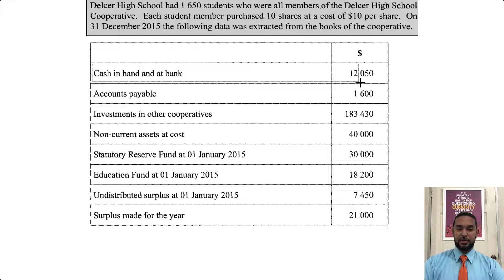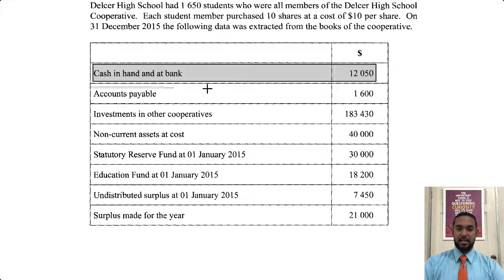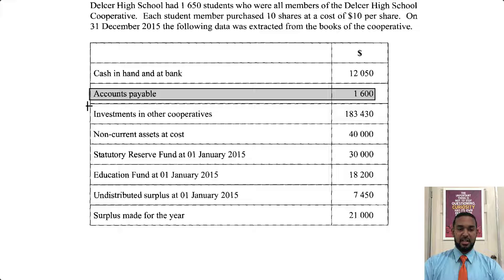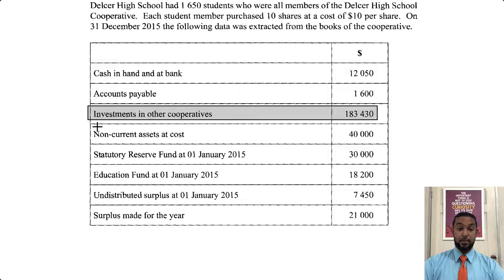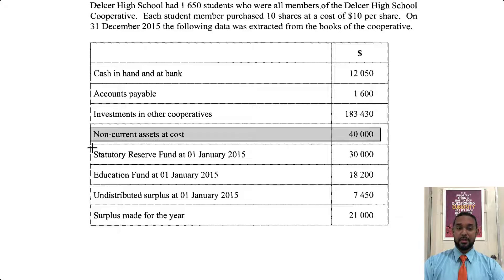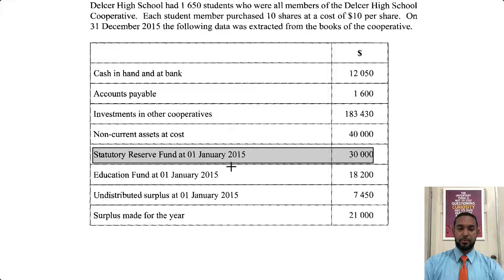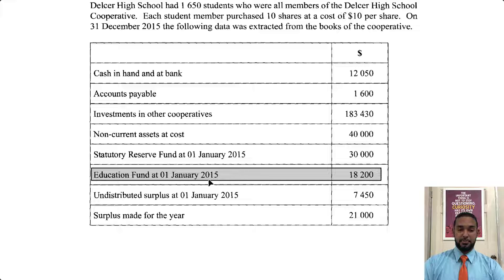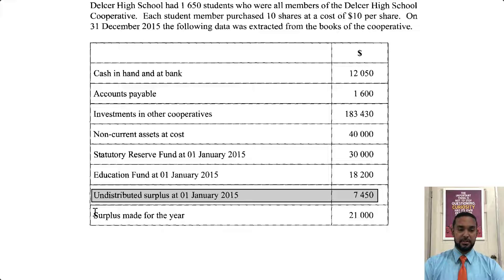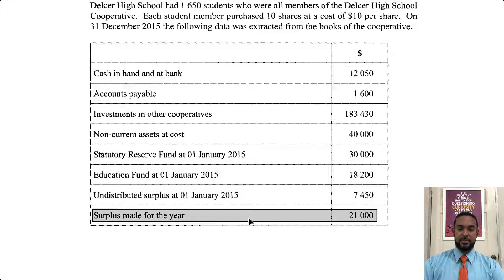So we have cash in hand or bank — that's an asset. Accounts payable — that's a liability. Investments in other cooperatives — that's an asset. Non-current assets at cost — asset. Statutory reserve fund at the start of the year — that's a reserve. Education fund at the start of the year — another reserve. Undistributed surplus — that's their version of retained earnings. And surplus made for the year, $21,000 — that's their profit. They don't call it profit, they call it surplus.